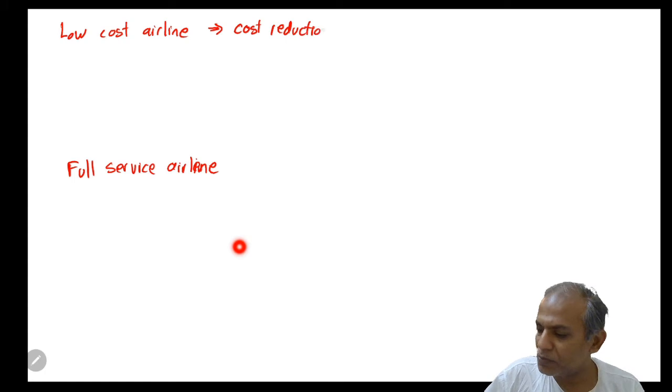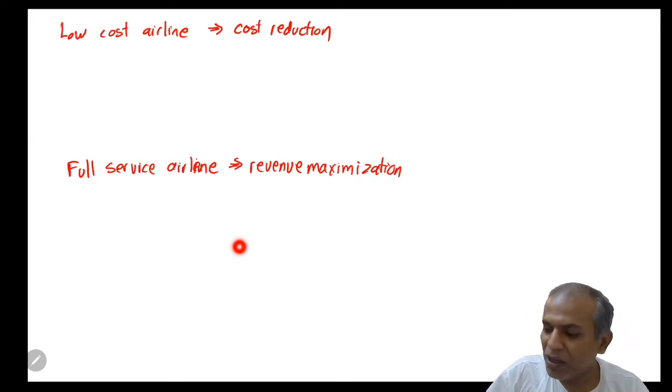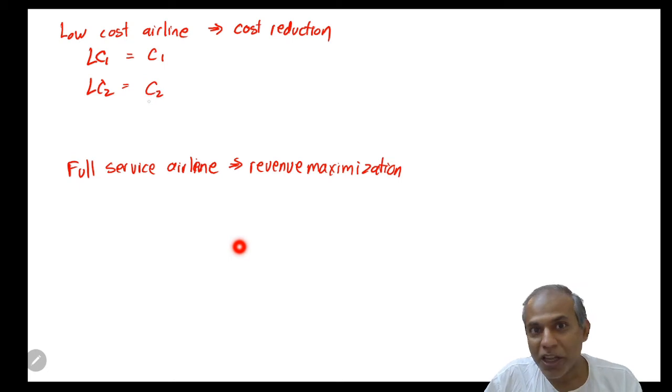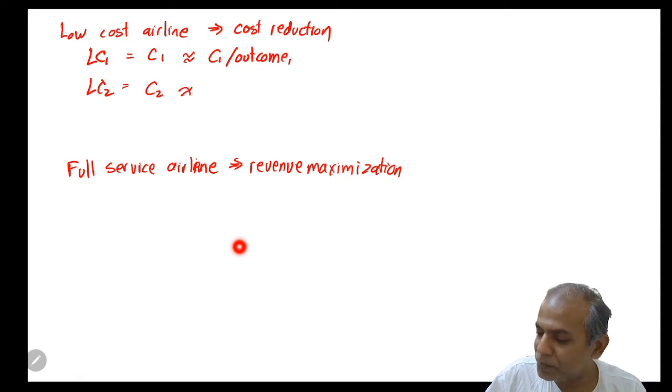Given these objectives, let's suppose I have two low-cost airlines. Low-cost airline one has cost C1 and low-cost airline two has total cost C2. Can we say that the airline with the lesser cost is the better low-cost airline? Well, if you were to design good metrics, we should not, because it all depends on how much outcome did you produce from that cost. So a good measure of a low-cost airline is not just the cost, but cost divided by outcome.